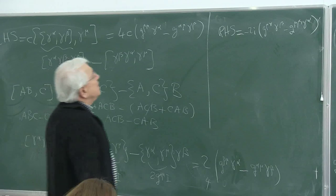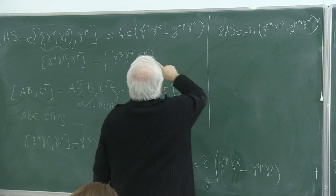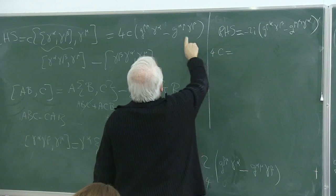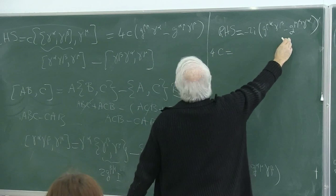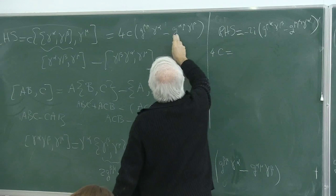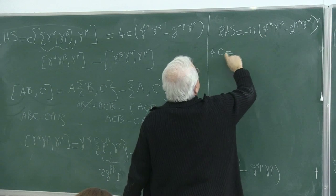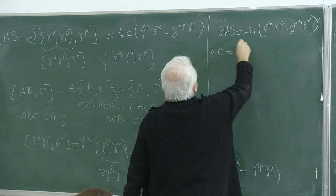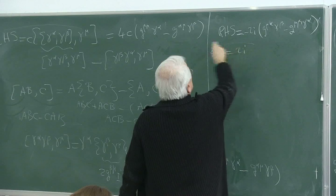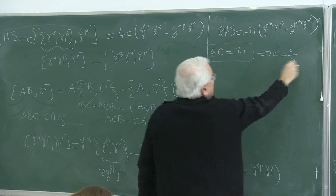Setting left equal to right: 4c equals plus 2i — because the signs work out with the minus-minus giving plus. So c equals i/2, which is beautiful.